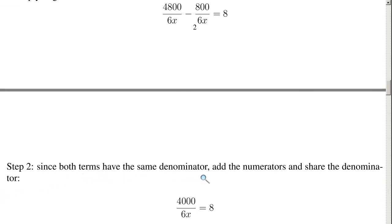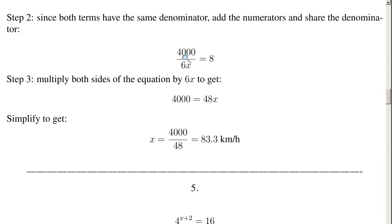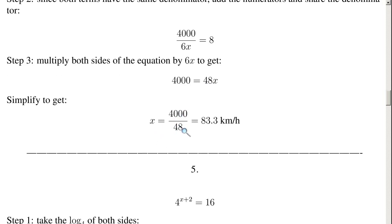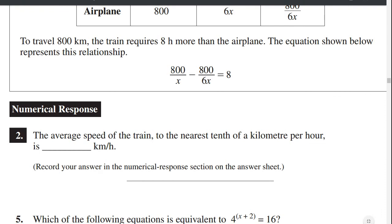Step 2: since both terms have the same denominator, subtract the numerators and keep the denominator the same. 4800 minus 800 is 4000. Preserving the common denominator 6x, we have 4000 divided by 6x equals 8. Step 3: multiply both sides by 6x to get 4000 equals 48x. Then divide both sides by 48: 4000 divided by 48 equals 83.3 kilometers per hour. That's your numerical response — to a tenth of a kilometer per hour, the answer is 83.3.